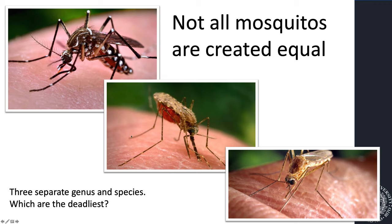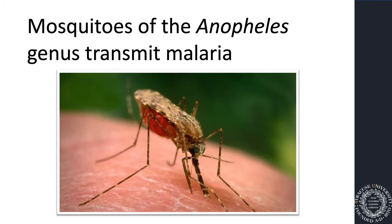The middle one is the most dangerous in the world — it's an Anopheles gambiae. The Anopheles genus is what transmits the parasite malaria. This specific mosquito has kind of a hunchback look to it, but it's the most dangerous mosquito in the world.